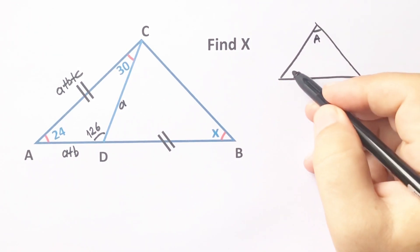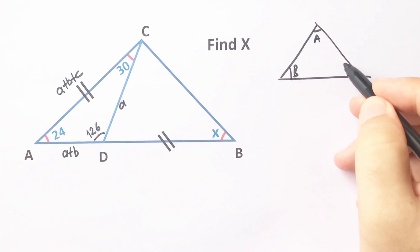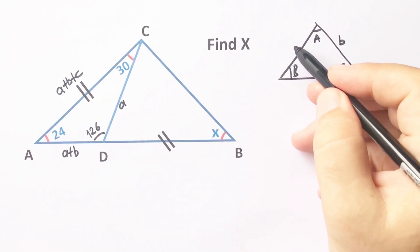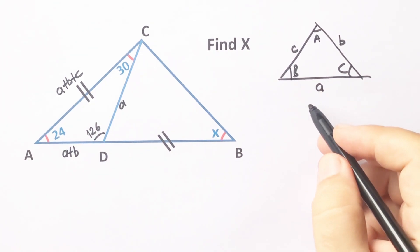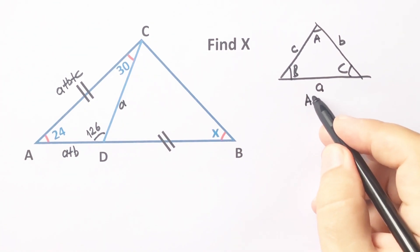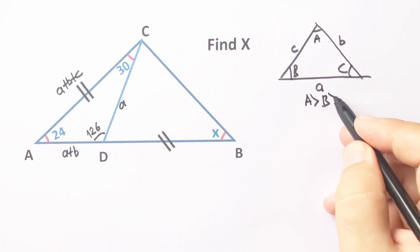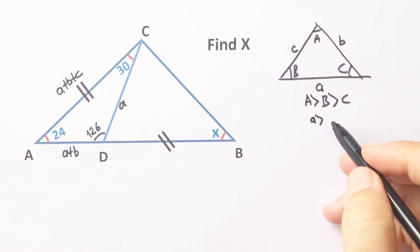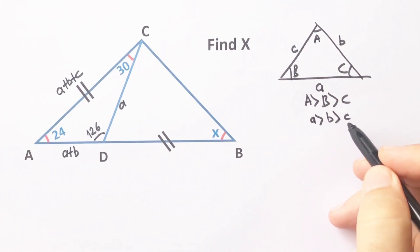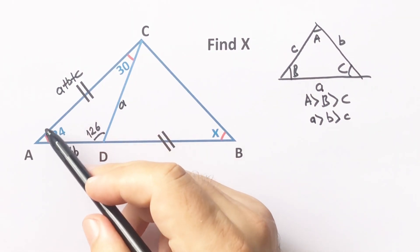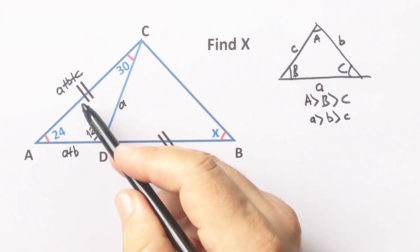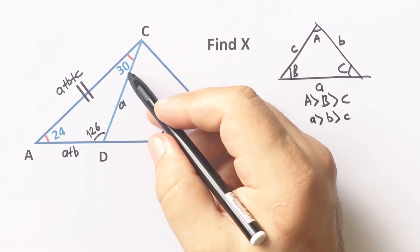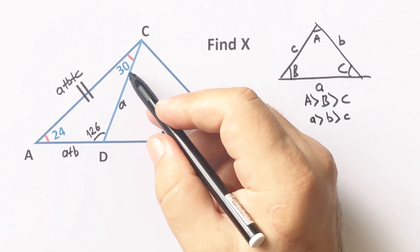Let me remind you: if we have a triangle with angle A, angle B, and angle C, and opposite sides a, b, and c respectively — if angle A is greater than angle B, and angle B is greater than angle C, that means side a is greater than b, and b is greater than c.